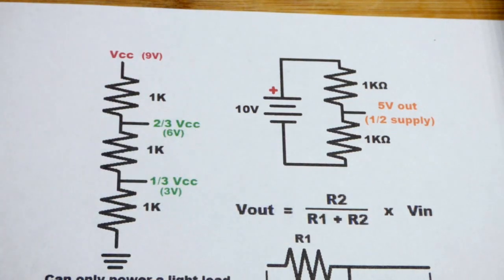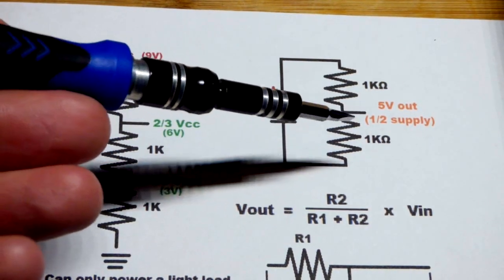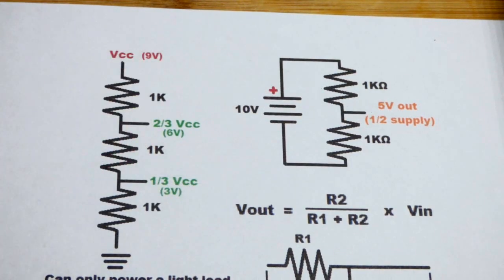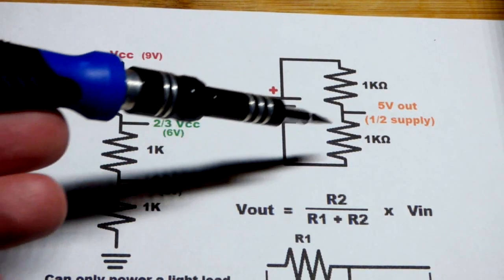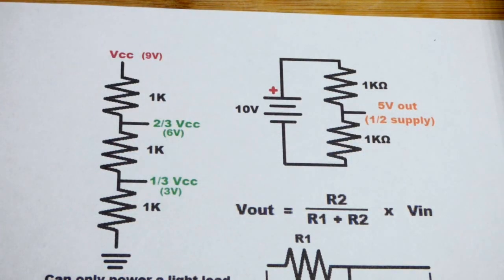Usually the load connects to ground, so you have to take that into account. You don't want any current to come out of it if at all possible, because otherwise you're getting closer to ground and it's going to pull the voltage down.